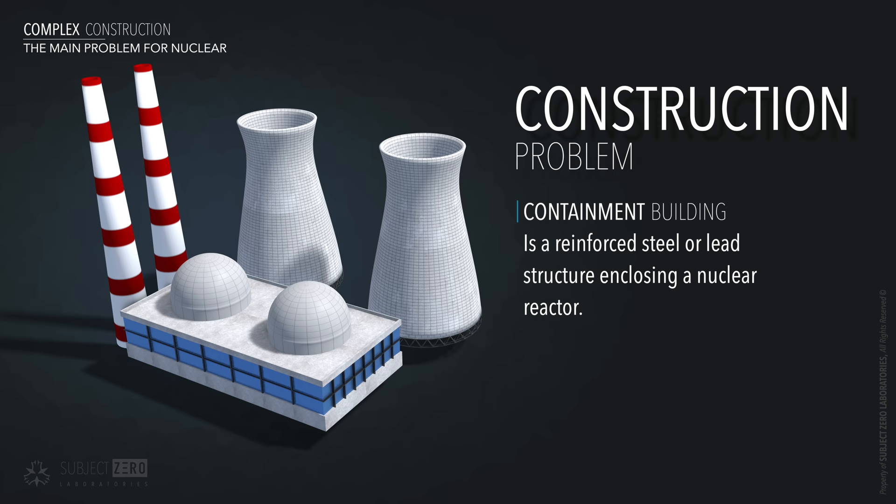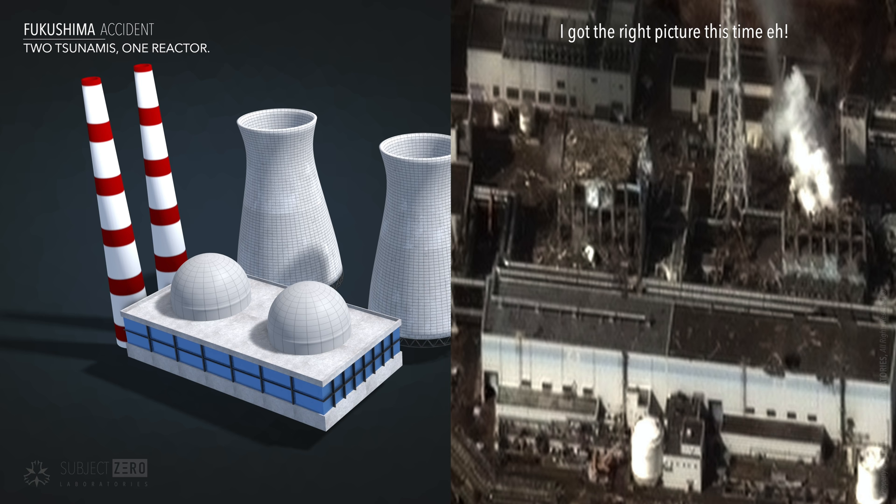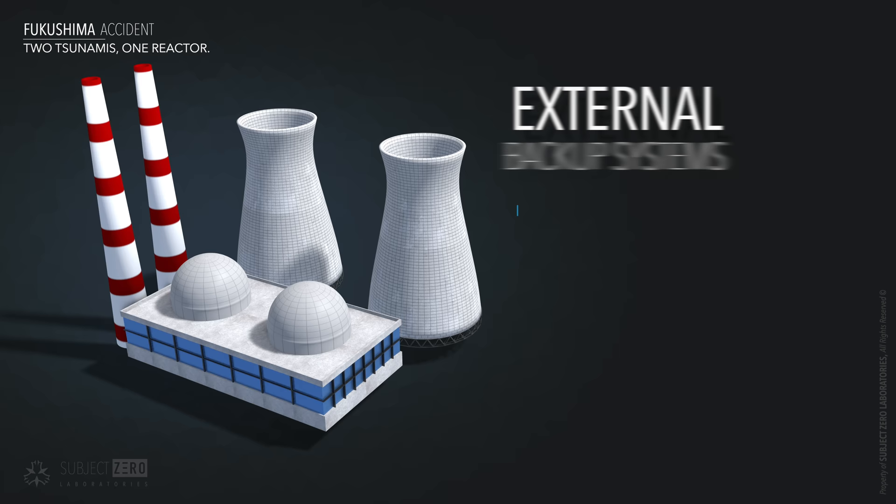One good example is the Fukushima accident. This power plant worked flawlessly for 40 years, but when a second tsunami hit the structure, something that it was not designed for, all of its safety barriers failed, resulting in the meltdown of fuel rods. The dependency on external systems to help cool down the core is a point of failure.